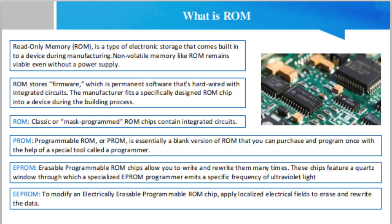Unlike a computer's RAM, the data in ROM is not lost when the computer power is turned off. While the ROM chip is commonly used in the startup operations for the computer, the RAM chip is often used in recurrent tasks once the operating system has been configured. Another difference between ROM and RAM is the amount of space they contain.